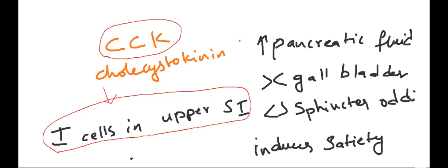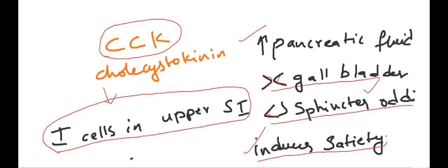The functions of CCK are: increasing pancreatic fluid secretion, constriction of the gallbladder, relaxation of the sphincter of Oddi, and inducing satiety. Satiety is the feeling of fullness — the hormone which helps in feeling fullness is CCK, cholecystokinin.